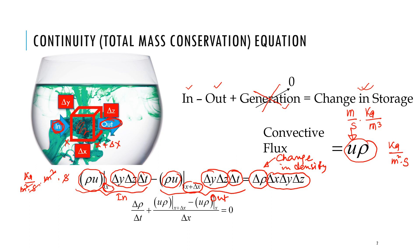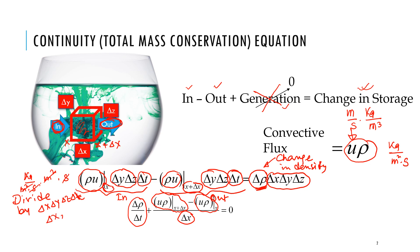Now we simplify. We divide throughout by delta x, delta y, delta z, and delta t. Doing that, we get del rho over del t, and the rest gives us rho u at x plus delta x minus rho u at x, divided by delta x, equal to zero. Then we shrink the control volume to zero to get the differential equation — making delta x, delta y, delta z, and delta t go to zero. That gives the differential equation: del rho / del t plus del/del x of (u rho) equals zero. That is the continuity equation in 1D, not yet considering flow in the y direction.